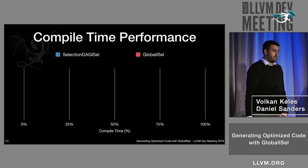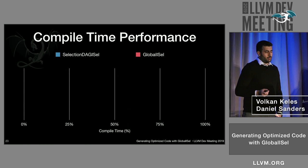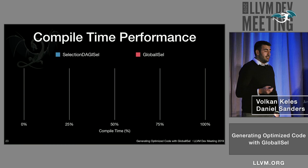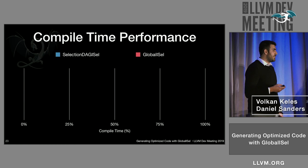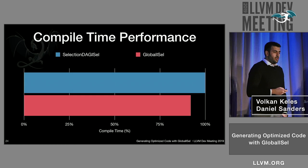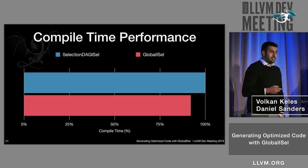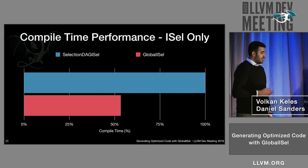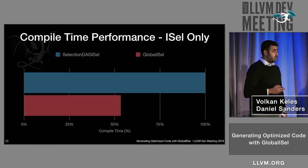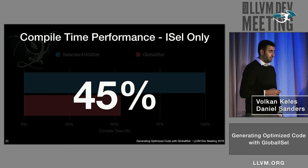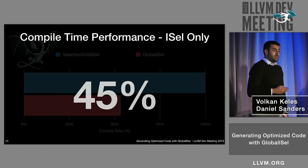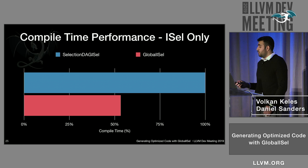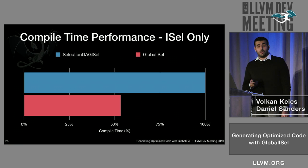What about compile time performance? As a GPU compiler, it's one of the important metrics for us. Today, on average, Global ISel improves compile time performance by about 8% — but this includes both optimizations and code gen, not only instruction selection. On instruction selection alone, the difference is much more: Global ISel is about 45% faster. So we were able to generate code as good as SelectionDAG ISel while improving compile time performance. Now let's talk about how we did this.